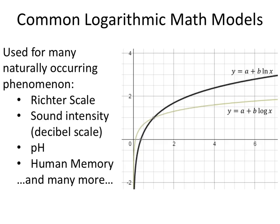This log x has a base of 10, and ln of x is log base e, which is 2.71. These are naturally occurring phenomena that use this, like the Richter scale, the decibel scale, pH, human memory, and there's many more that could use this. But these are the most common ones, with the top three being the utmost common ones that you'll see.